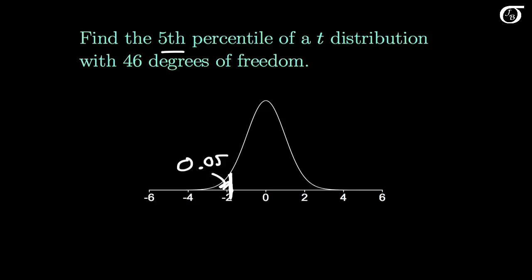Back to our plot here, R tells me that the 5th percentile of this distribution, when rounded to 3 decimal places, is minus 1.679. That is the value that has an area to the left of 0.05 under a t-distribution with 46 degrees of freedom.